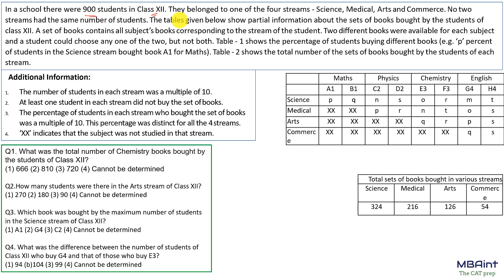In a school there were 900 students in class 12. They belong to one of the four streams: science, medical, arts, and commerce. No two streams have the same number of students. The table below shows partial information about the sets of books bought by the students of class 12. A set of books contains all subjects corresponding to that stream of the student.